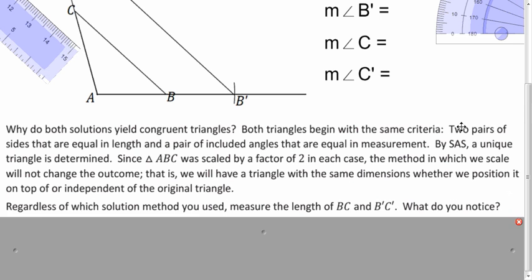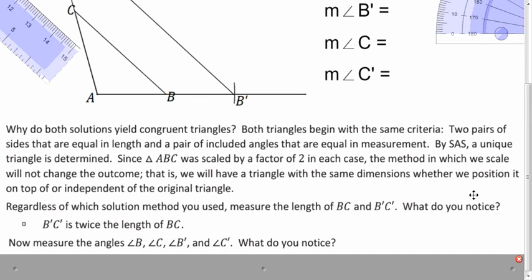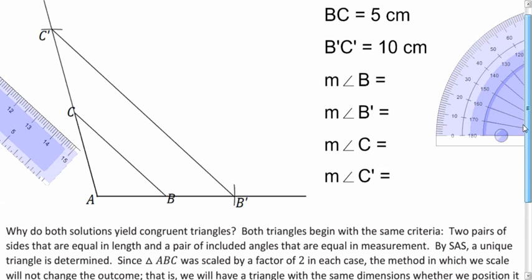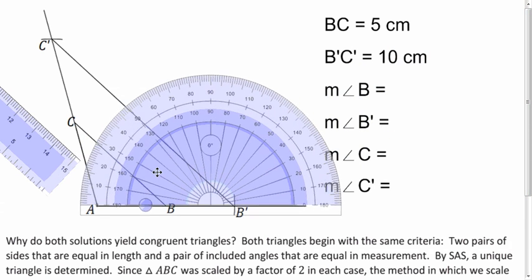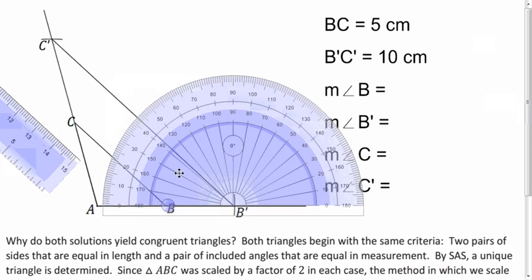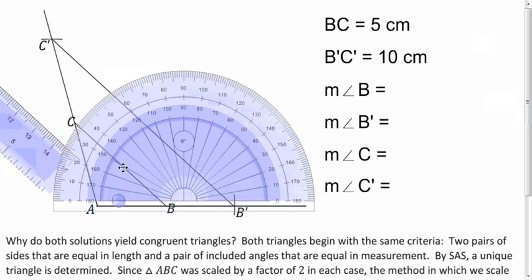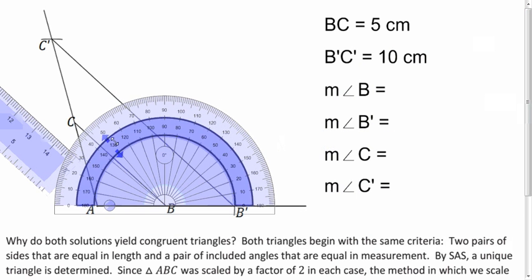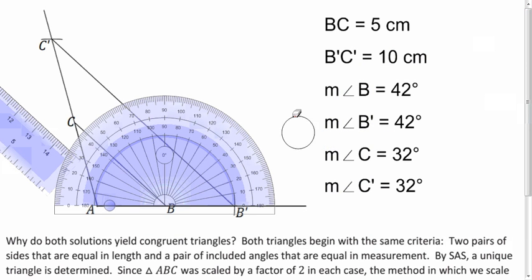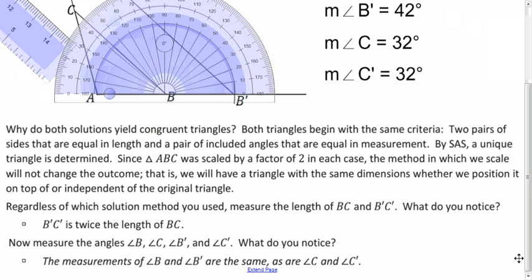And what do we notice about the angles? So if we measure, for example, angle B and B prime, let's say B prime over here looks to be about 42 degrees and B here also looks like 42 degrees. And it turns out we measure C and C prime. We get 32 degrees for those. So the angles, their measurements stay the same when you do a scale image.